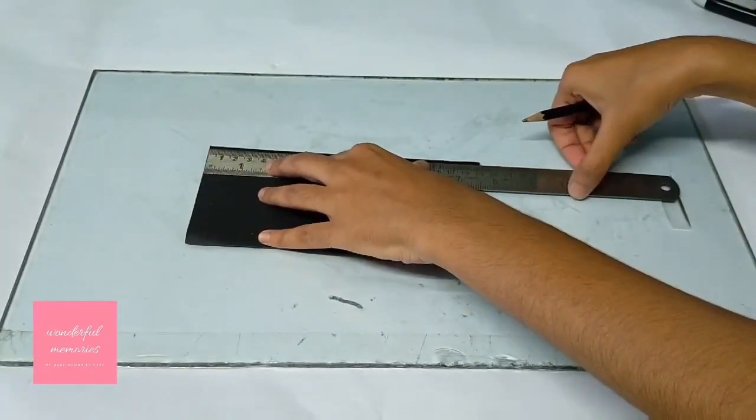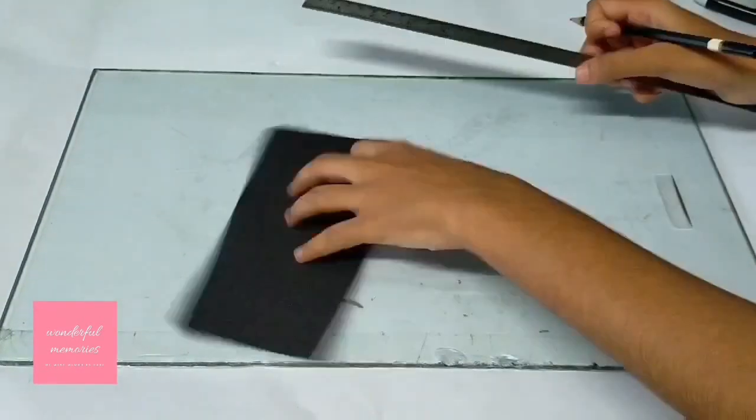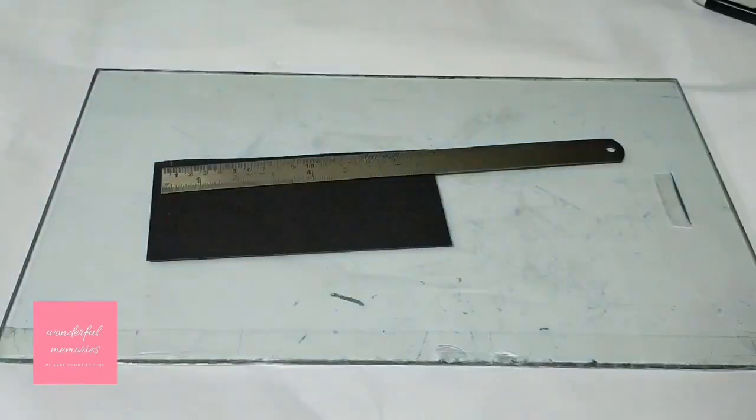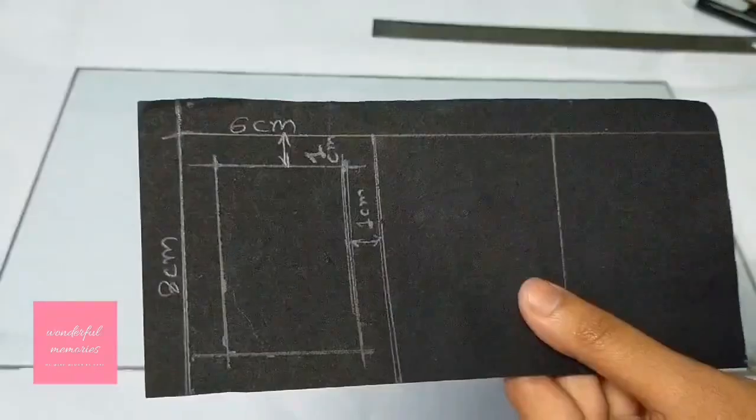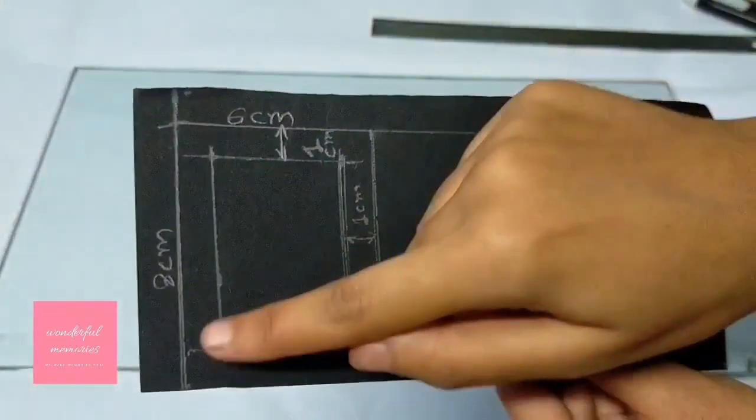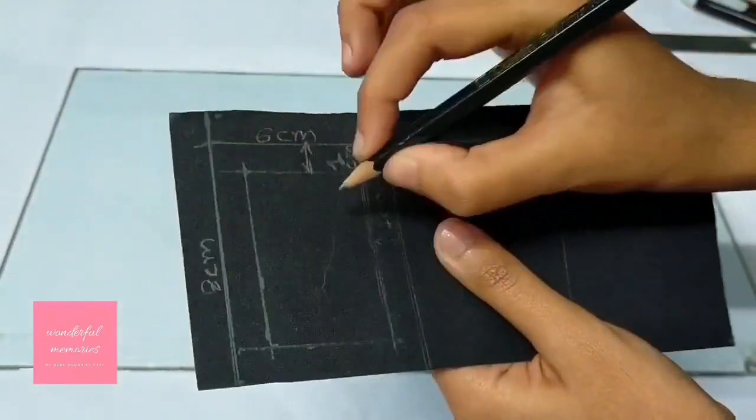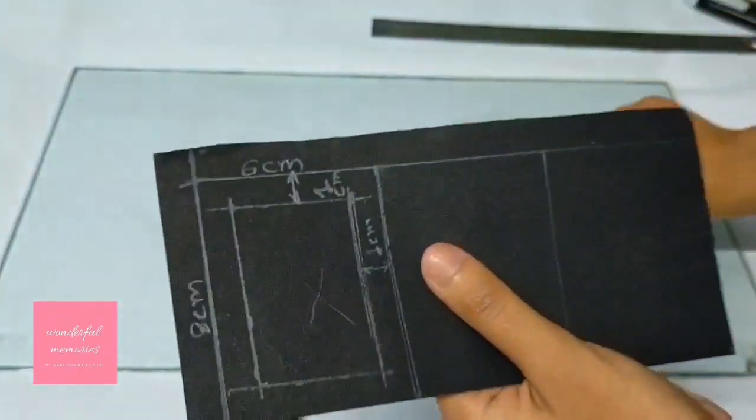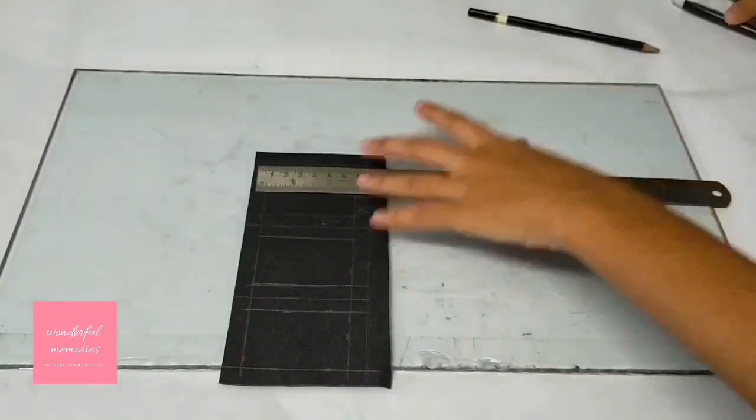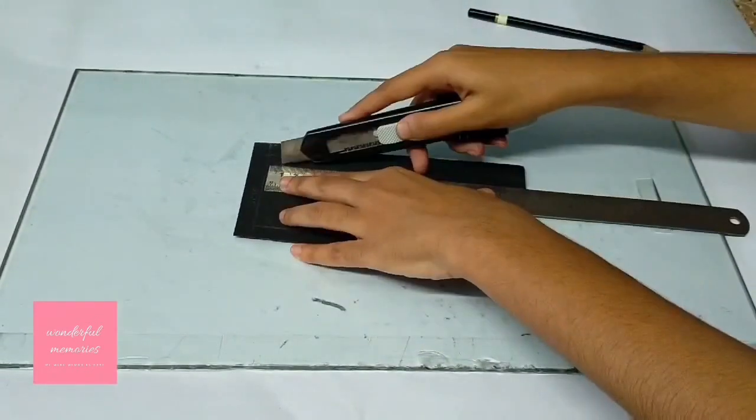As shown in the video, as per the marking shown, cut the middle part of the paper to give it the look of a film strip.